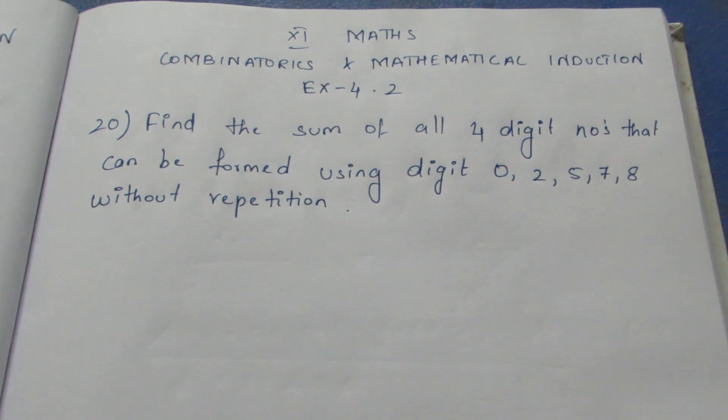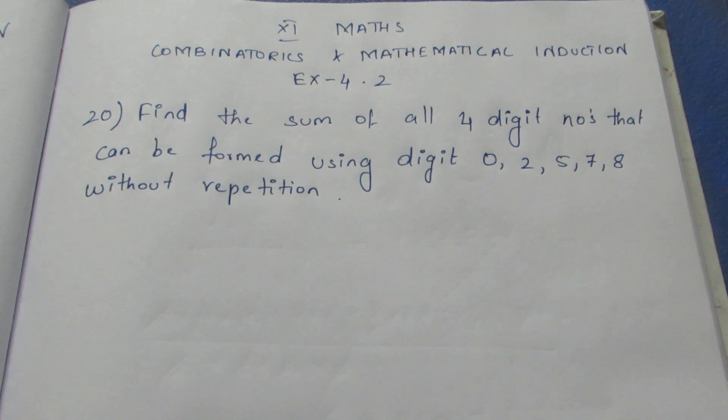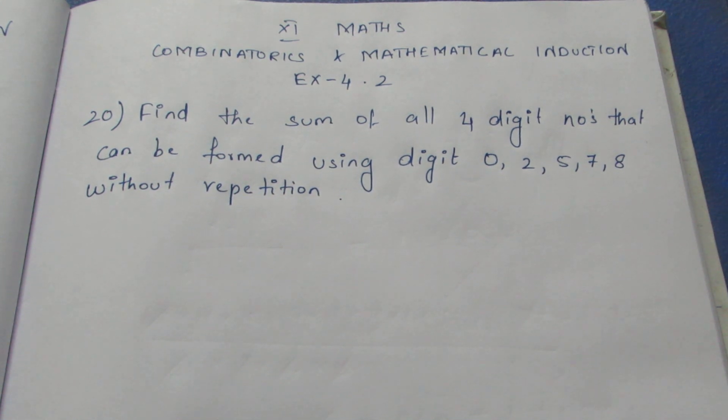So without repetition, we need to find this sum. Today, how many total 4-digit numbers can be formed? The 4-digit numbers, when you add them all, what value do you get? Same model as the 19th sum.